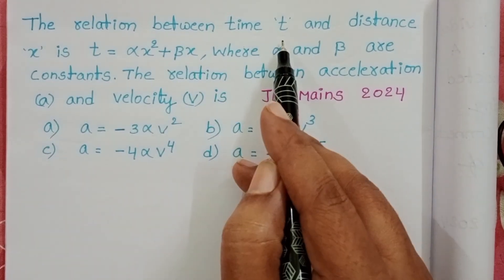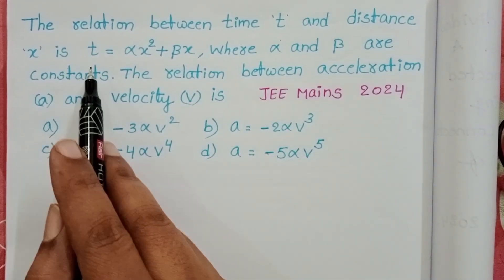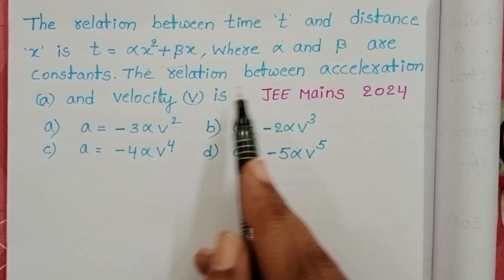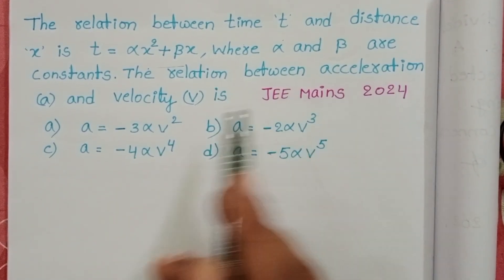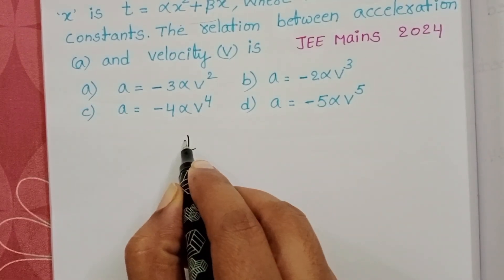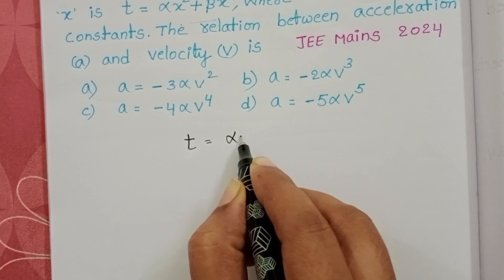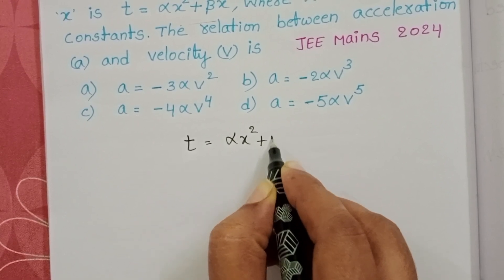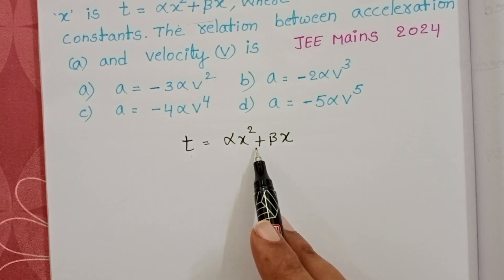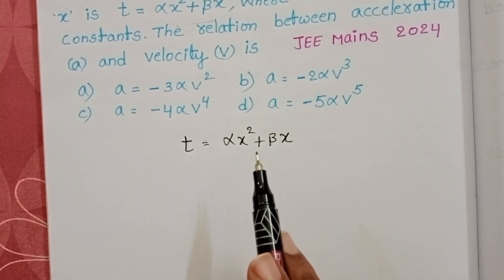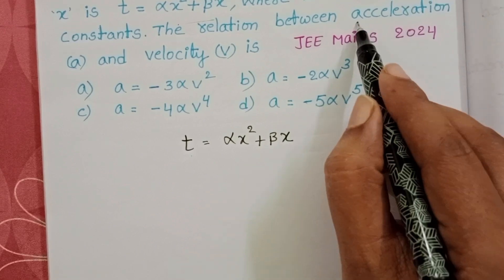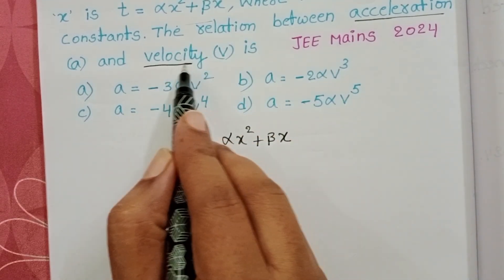The relation between time and distance x is given as t = αx² + βx, where t is time, x is distance, and α and β are constants. Using this relation, we have to find the relation between acceleration and velocity.